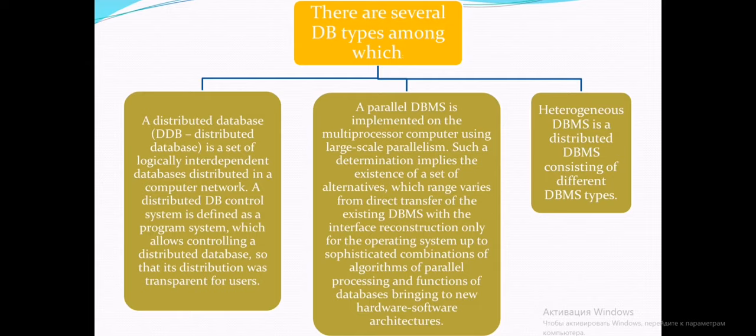There are several DB types, among which a distributed database is a set of logically interdependent database descriptors in a computer network. The DB control system is defined as a program system which always controls a distributed database so that its distribution is transparent for users.